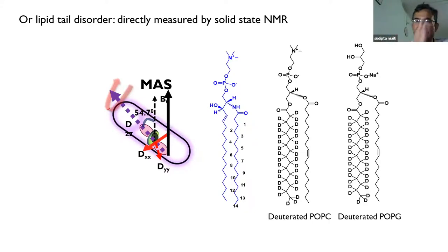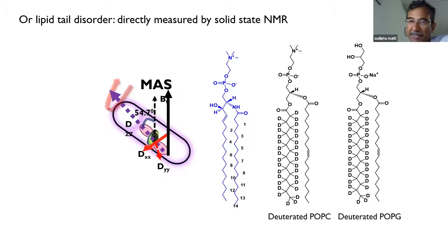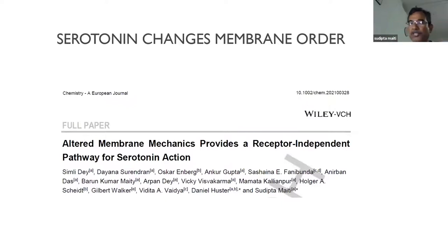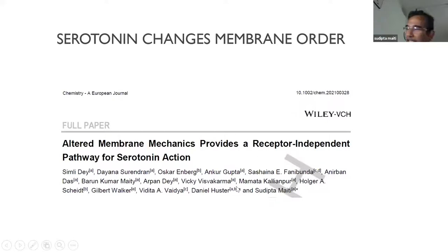A spectroscopic probe such as Nile Red or Laurdan GP value should move in a certain way if the membrane is becoming more ordered or disordered. Similarly, my AFM force should decrease if the membrane becomes more disordered, and my NMR should report higher dynamics. Does that happen? If it does, everything is fine — you can choose your probe and interpret it as membrane order. If the probes don't agree, then you don't know what you're talking about.